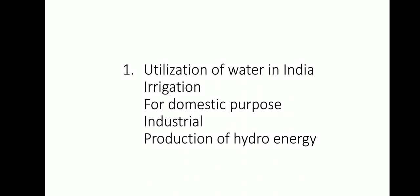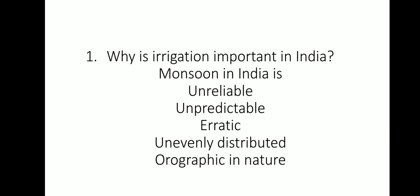Utilization of water in India — there are different ways we can use water. First is irrigation, which means giving water to plants. Second is for domestic purposes — the number of works we do at home. Third is for industries. Fourth is production of hydro energy. Apart from this, water is also used for recreation and fishing.